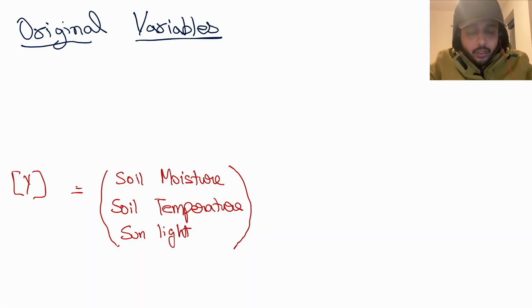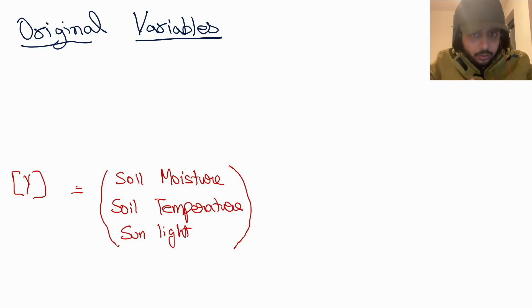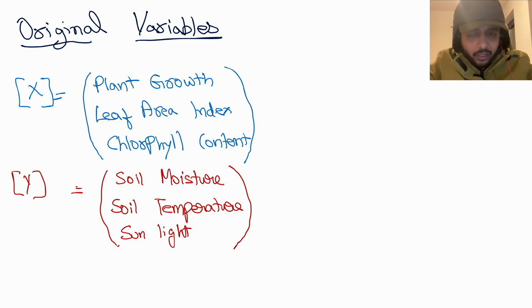Let's understand how Canonical Correspondence Analysis works using the ecological variables from the previous slide. We have two sets of measurements: first, the environmental variables — the y vector — including soil moisture, soil temperature, and sunlight exposure. And we have our biological variables — the x vector — including plant growth, leaf area index, and chlorophyll content. Let's consider three of each for illustration.